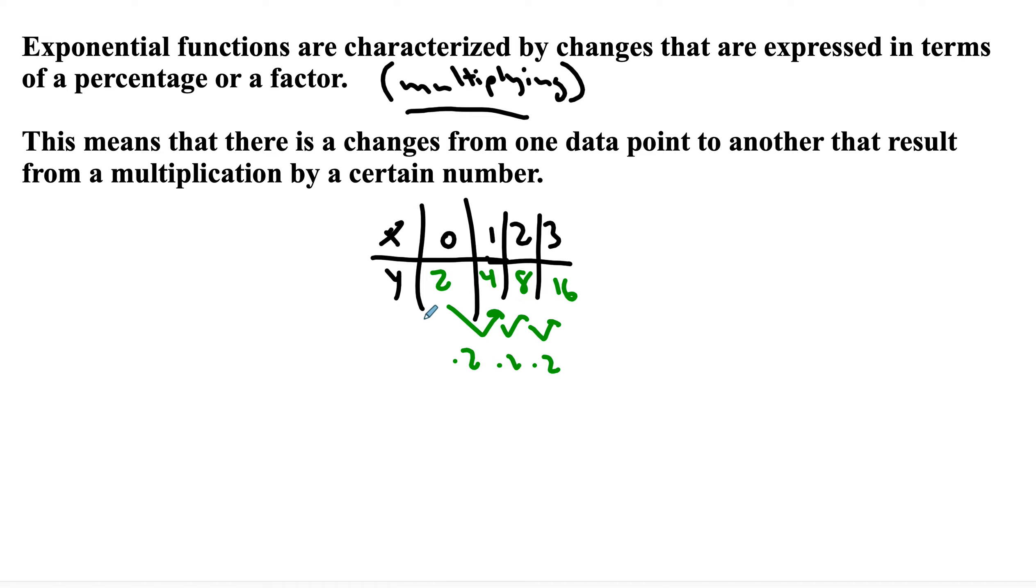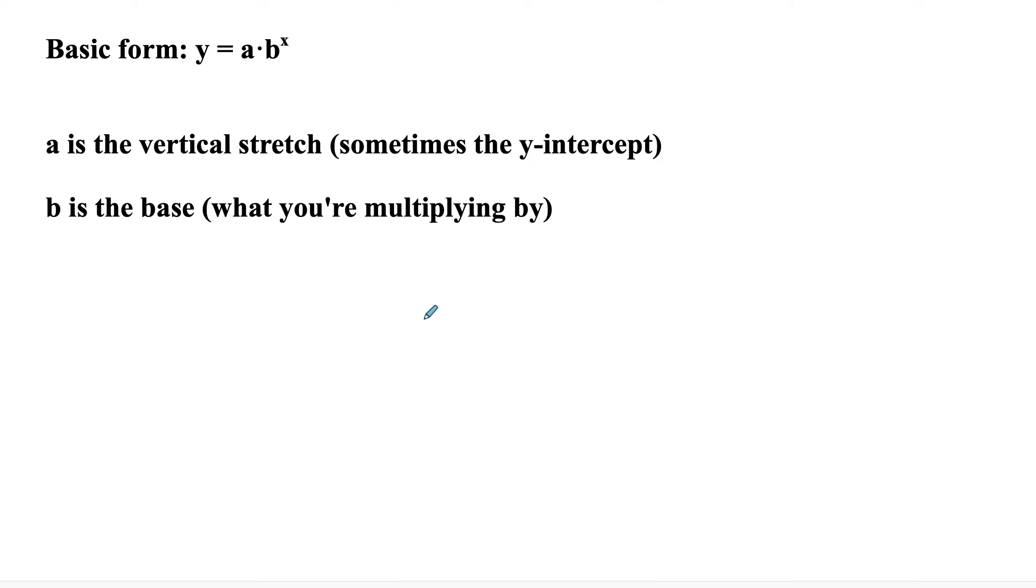Exponential decay is something where it's going down. Okay, so the basic form of this is a times b to the x.